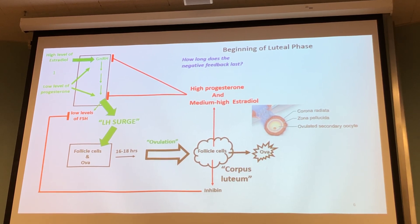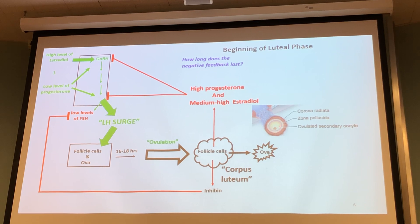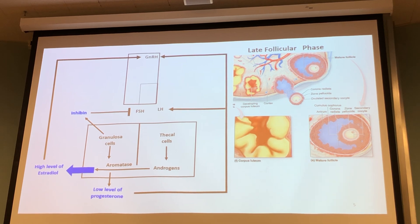The egg leaves the follicular structure with some remaining granulosa cells surrounding it, and there's another layer called the zona pellucida. When looking at the egg, sperm cells have to burrow through a couple of layers of granulosa cells, then through the zona pellucida, then through the plasma membrane of the ovum itself — that takes a lot of energy. Because of the LH surge, 16 to 18 hours after the peak, this ovum with surrounding granulosa cells is ejected from the follicular structure and heads to the fimbriae, the ampulla, and the isthmus of the fallopian tubes.